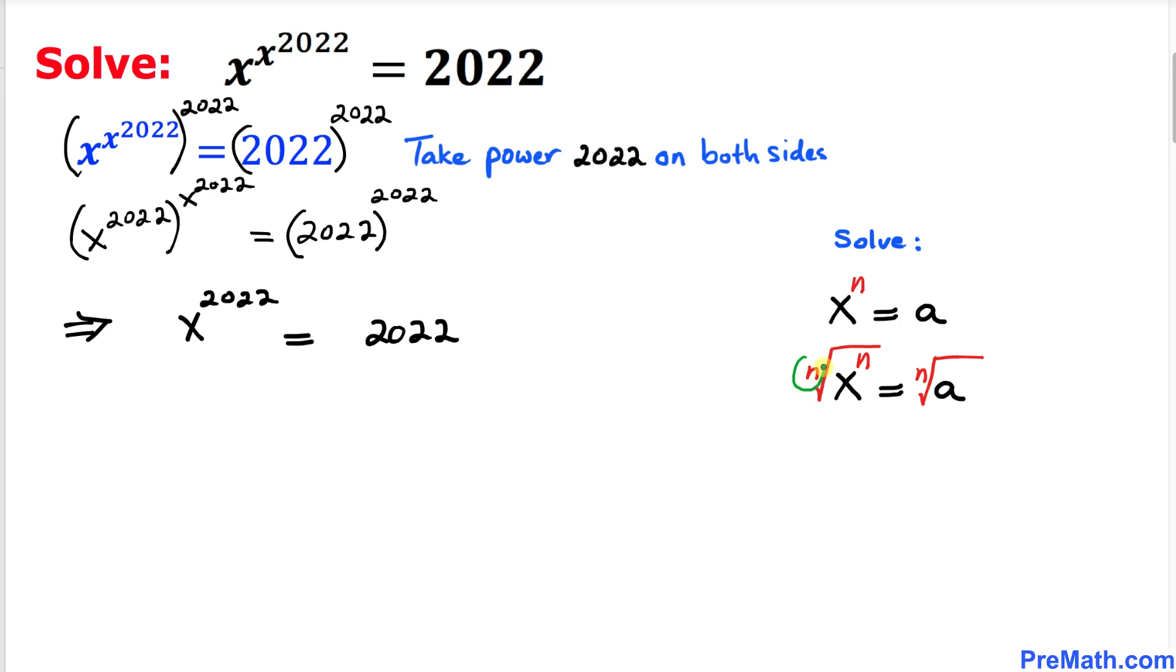I took the nth root on right-hand side as well. Now this n and this n, they cancel each other out, so our x value turns out to be nth root of a.